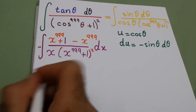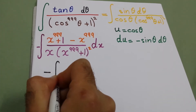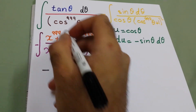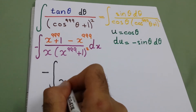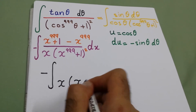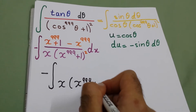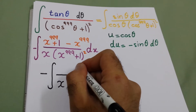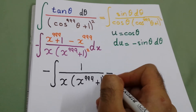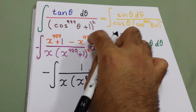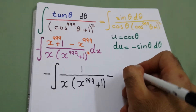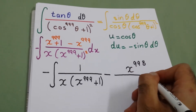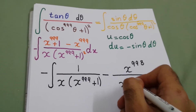We have minus x to the power 999; the square will cancel with the numerator, so it will be x to the power 999 plus one to the power one. And we have minus x to the power 999 divided by x, which gives x to the power 998 over x to the power 999 plus one.